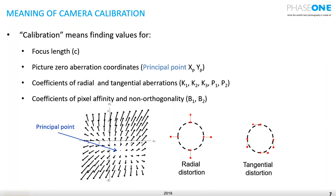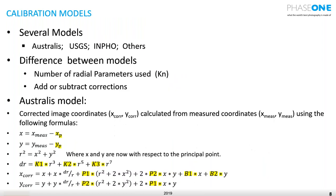What is the meaning of camera calibration? It means that we find the values of the focal length C, we find the principal point coordinates xp and yp, we find the coefficients of the radial and tangential aberrations — k1, k2, k3 (radial) and p1, p2 (tangential) — and we find the coefficients of pixel affinity and non-orthogonality, b1 and b2.